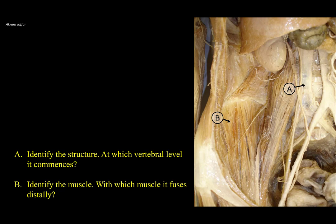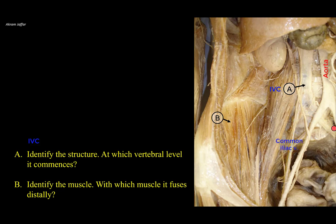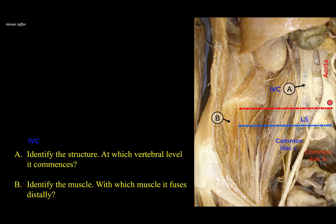Identify the structure, at which vertebral level it commences, and identify the muscle with which muscle it fuses distally. This is the posterior abdominal wall and the pelvis. To the left of the midline is the aorta, and just to the right is the inferior vena cava. Following the inferior vena cava downwards, you can see it is formed by the union of the two common iliac veins — just as the aorta divides into two common iliac arteries. The union of the two common iliac veins to form the inferior vena cava is at the level of L5 vertebra, while the bifurcation of the aorta is at the level of L4 vertebra.